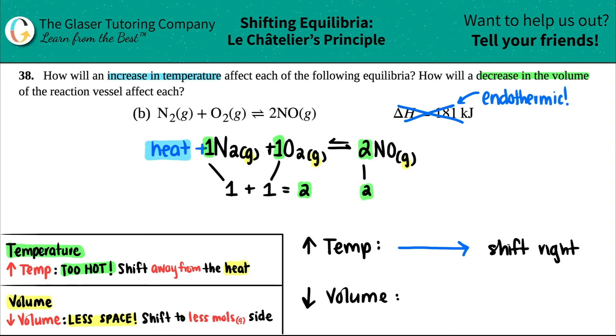And look here guys - two equals two. Is there a side that has less moles? No, they're both the same. So is it going to shift? You got it - there's no shift since there's no less mole side. So if I decrease the volume, there is no change.